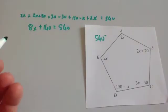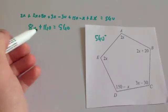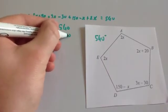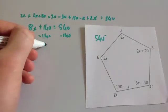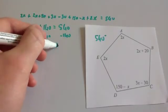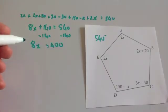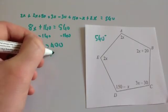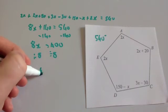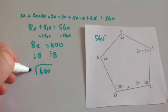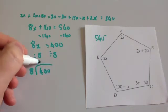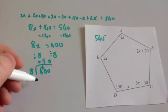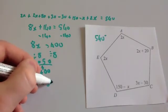So 8x plus 140 equals 540. Take 140 off both sides to get 8x equals 400. Divide both sides by 8: 400 divided by 8 equals 50. So x equals 50 degrees.